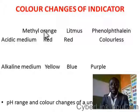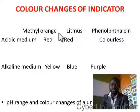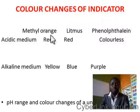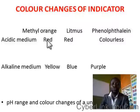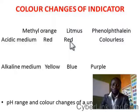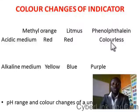Methyl orange is an indicator — take note if you don't know. Litmus paper is also used as an indicator. Phenolphthalein is another indicator. If you have methyl orange and you put acid inside it, the methyl orange will turn red. If you have blue litmus paper and you put it inside a solution that contains acid, that blue litmus paper will turn red. If you have a phenolphthalein solution and you pour a little acid inside it, it will turn colorless.